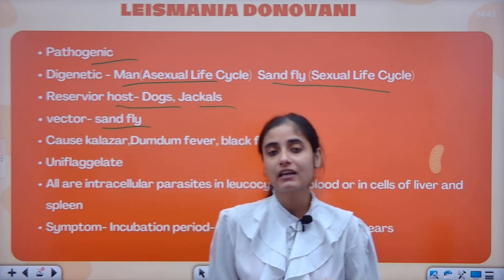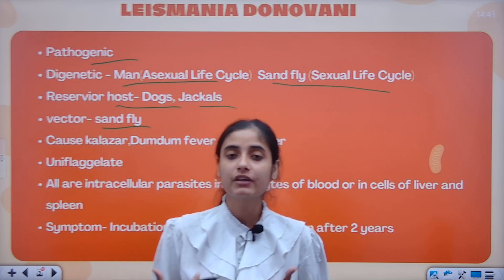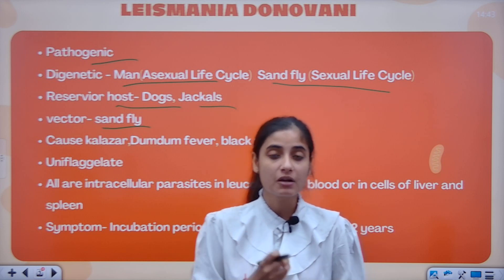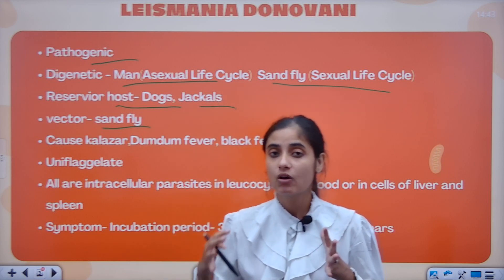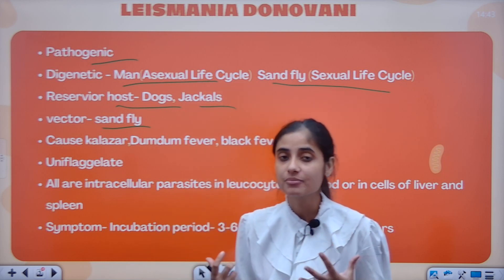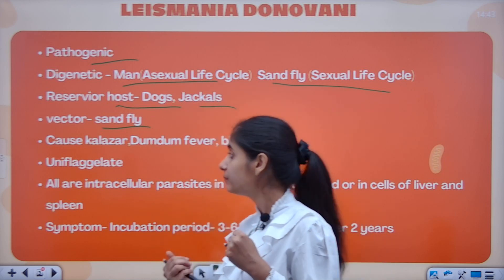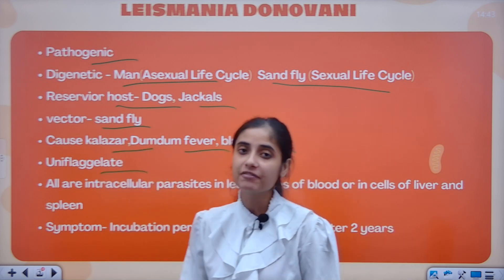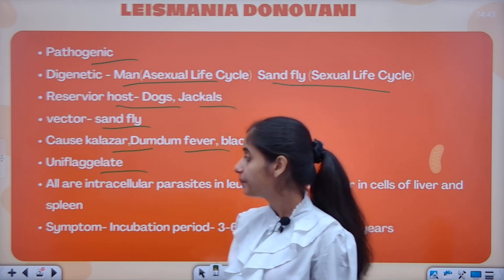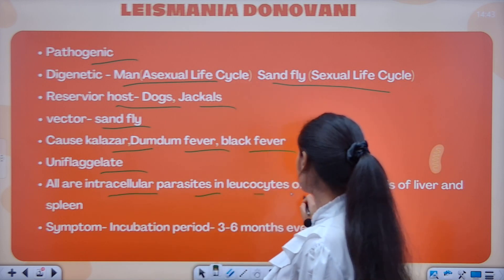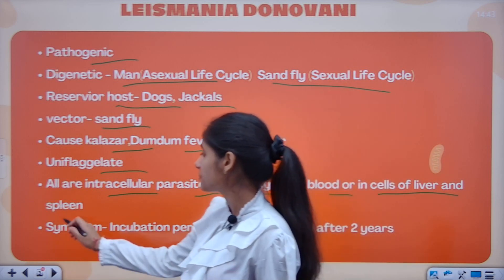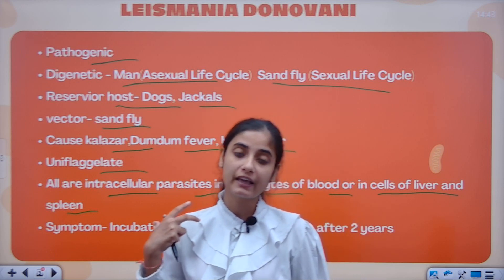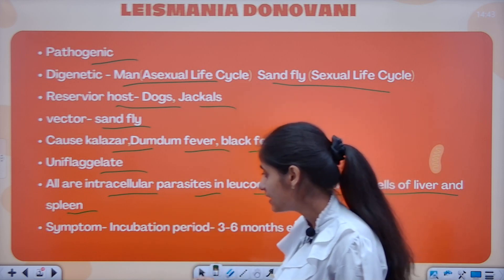The disease caused is called Kala Azar, Dum Dum Fever, and Black Fever. The symptoms include high fever, dark pigmentation, and enlargement of the liver and spleen. It is an intracellular parasite, residing in leukocytes of blood and cells of the liver and spleen.